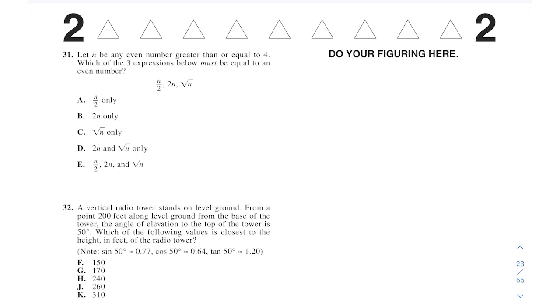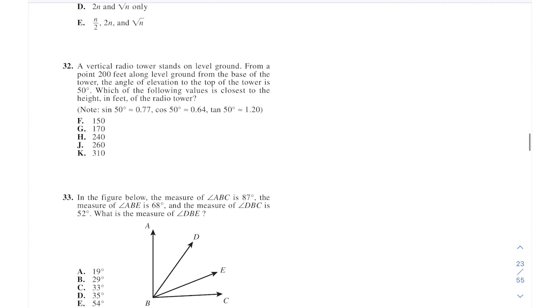So you can just try some values here for this. Let's try 6. They want to know which of the three expressions below must equal an even number. So if n is 6, that would be 3, 12, and root 6. So 2n has to be an even number, and that's the only one. We don't even have to try any other number. That worked out nice.